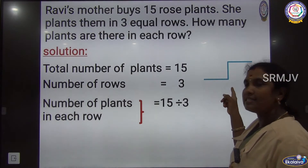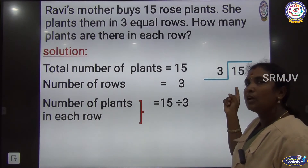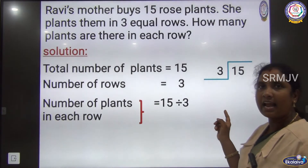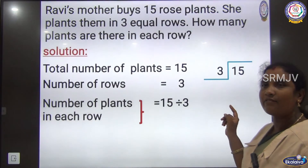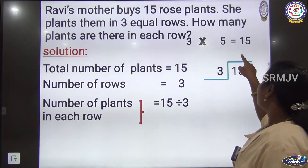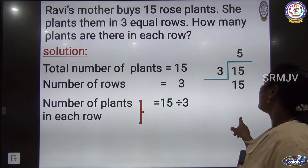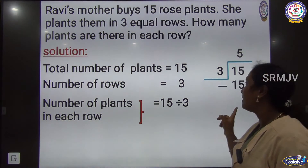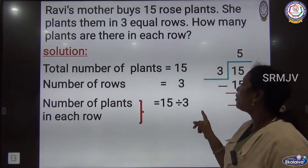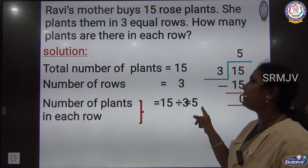To find the answer, we have to recite the 3 times table: 3 1's are 3, 3 2's are 6, 3 3's are 9, 3 4's are 12, 3 5's are 15. So we place 5 here and 15 here. When we subtract the same number we get 0. So Ravi's mother planted 5 plants in each row.